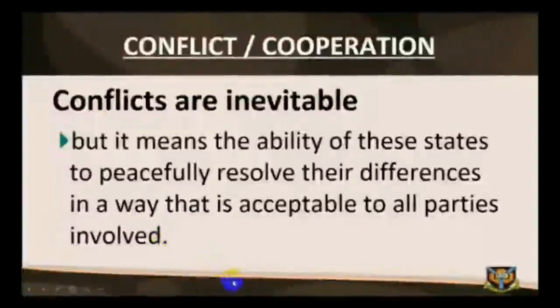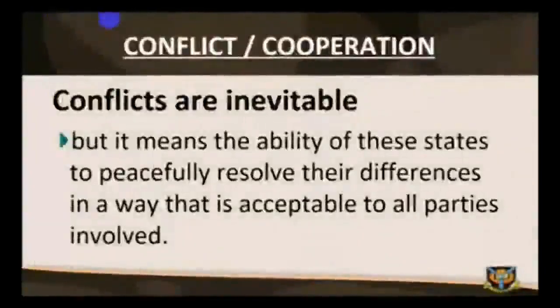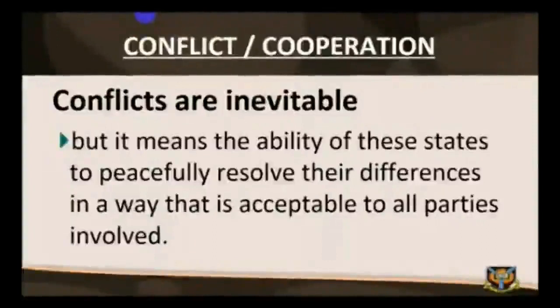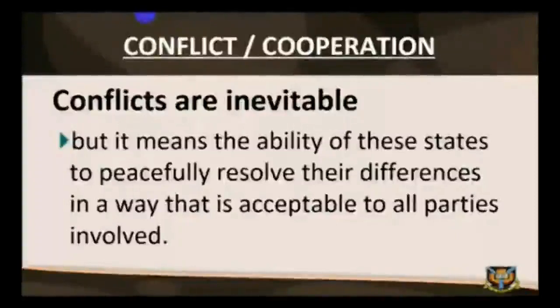Cooperation does not necessarily mean the absence of conflict, but means the ability of states to peacefully resolve their differences in a way acceptable to all parties. When cooperation fails, conflicts take over and most often lead to war. All actors in the international system have different historical, cultural, and social backgrounds. Because of this, their values and goals are usually different, and if care is not taken, there are possibilities of clashes of interests. Each state knows it must sometimes make compromises, employ threats, or even engage in conflicts in its relations with others.